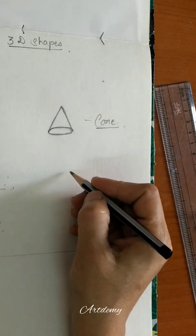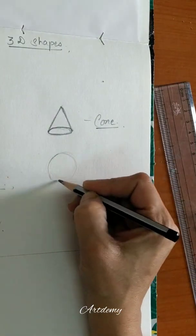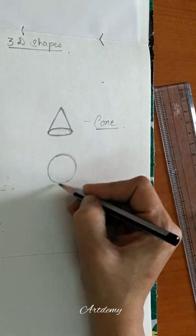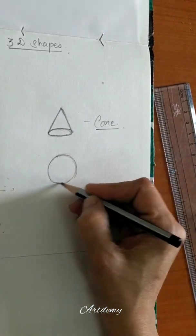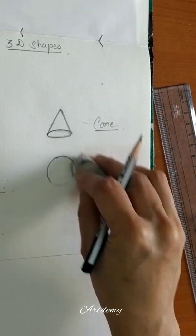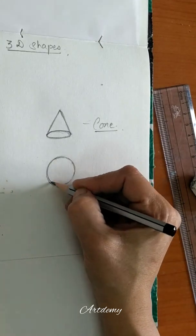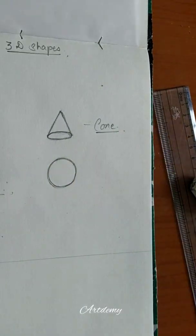And then finally we will draw a sphere shape. So again we have to make a proper circle, and that's it. So for today's 3D shapes, we have learned all these things.